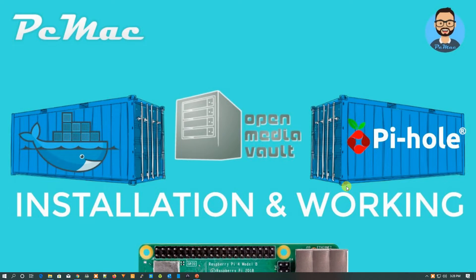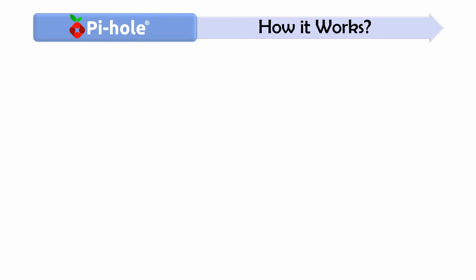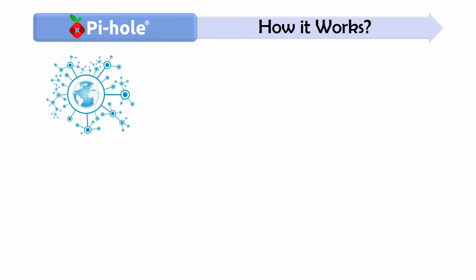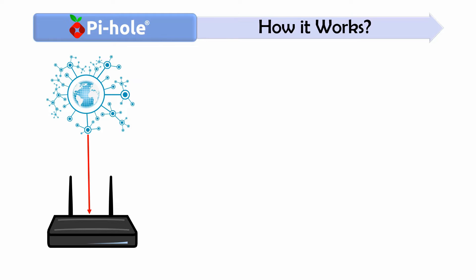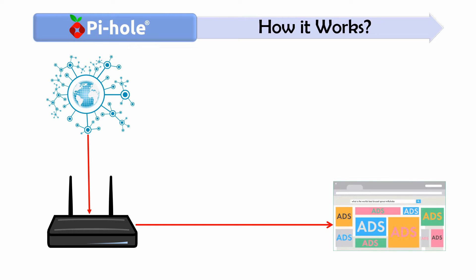Welcome to PC Mac. Today we are going to install Pi-hole on OpenMediaVault with the help of Docker. Before starting, let me explain how Pi-hole works. Suppose we have an internet connection and we are connected through our modem or router. Whenever we are directly connected to the router, we are getting lots of ads on screen.